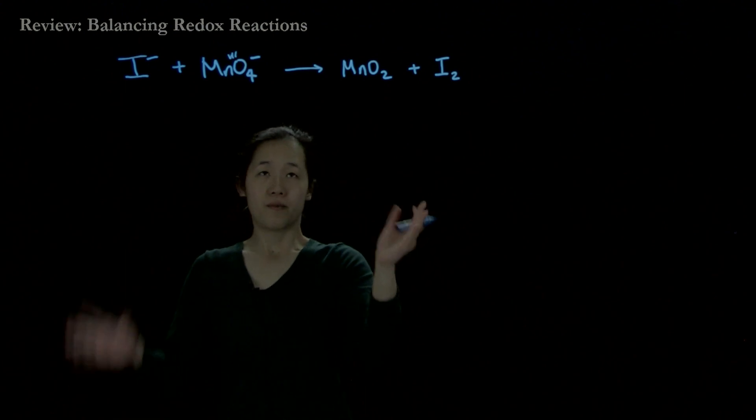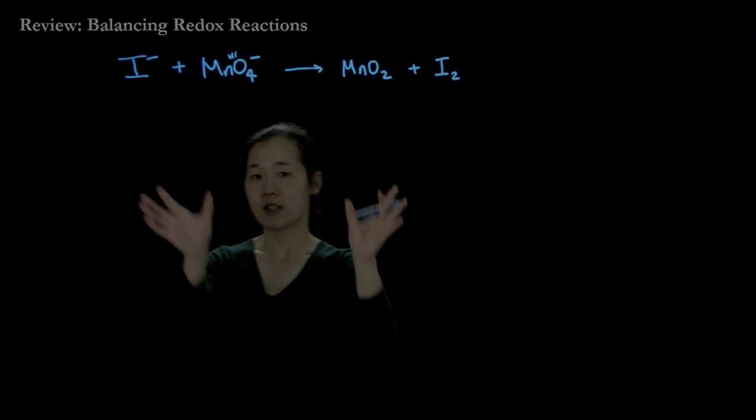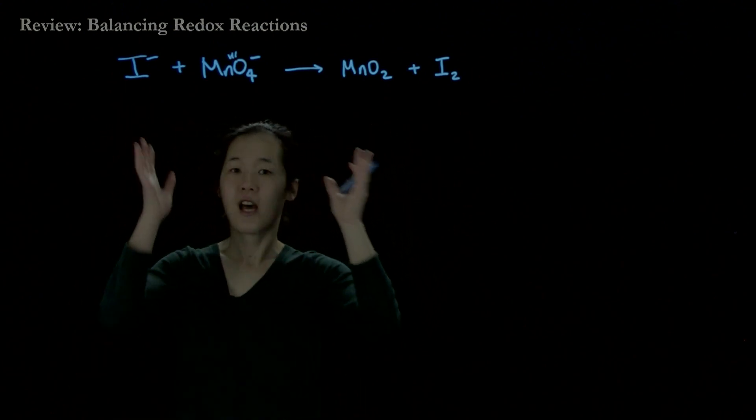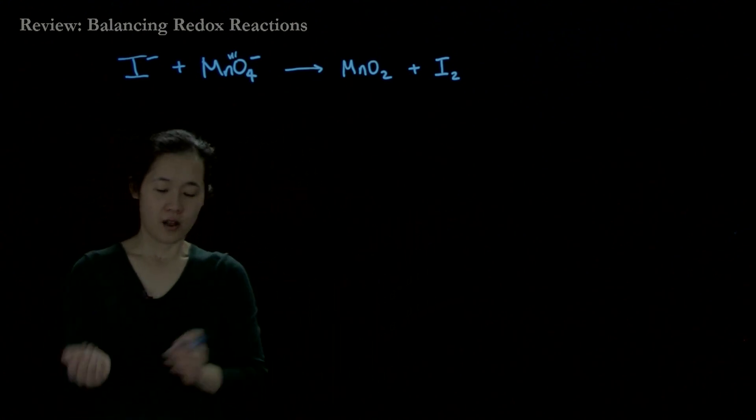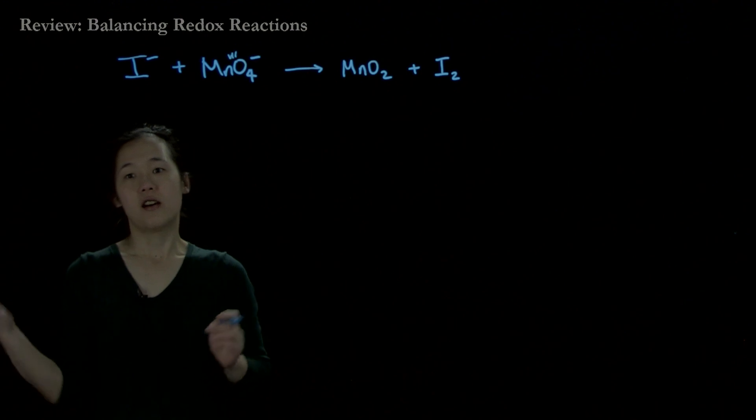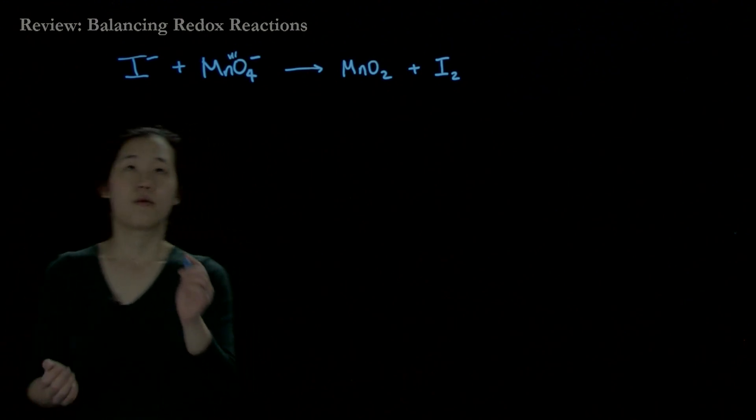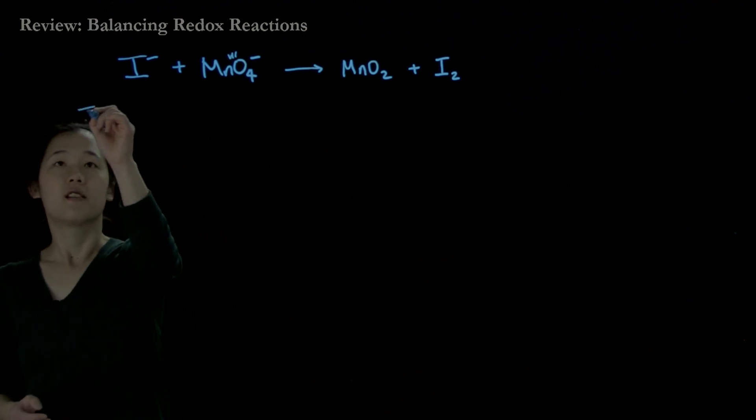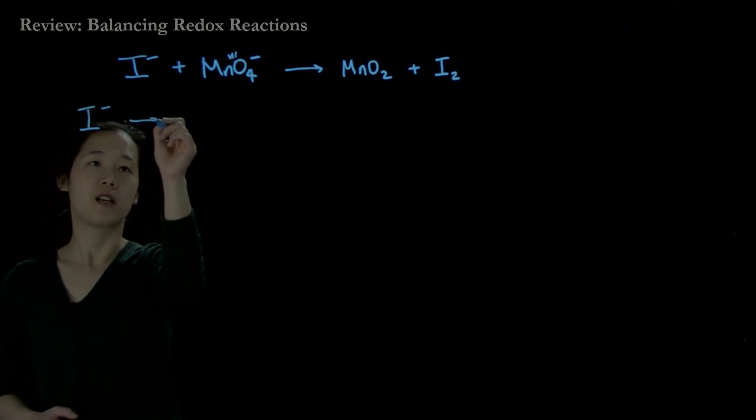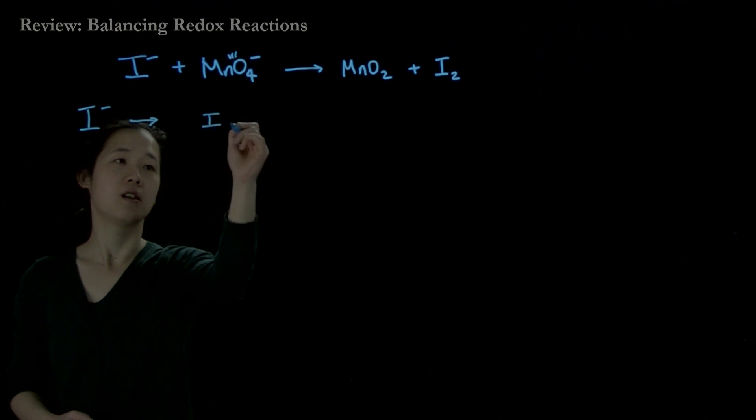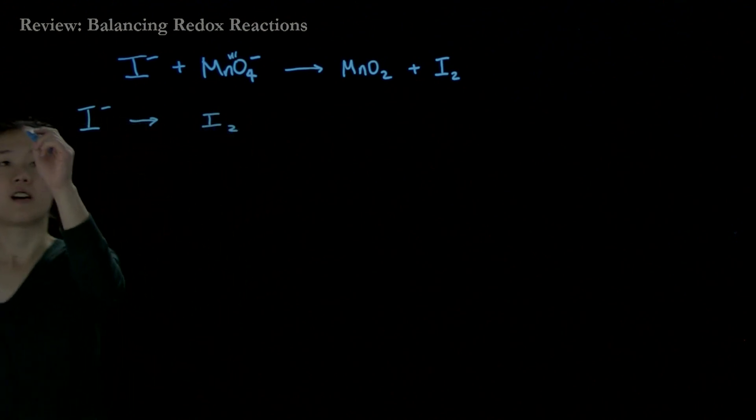To review how to balance these reactions, we must first write out the respective half-reactions. On the left side, we have the anodic reaction, which is the oxidation: iodide going from I- to I2.